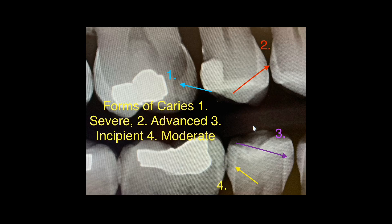Looking at incipient caries, labeled number three, you can see that the extent of the lesion is almost halfway through enamel but not more than that, which is enough to classify it as incipient caries. Normally, such caries are not treated or operated upon and have the best chance to remineralize.